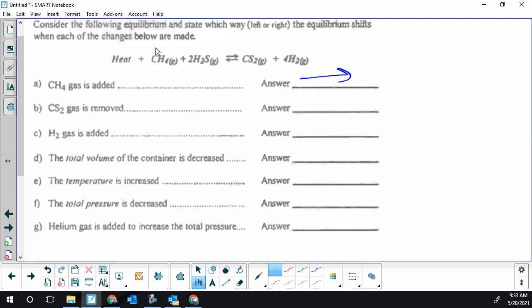In the second example we have the removal of one of our products. If we remove this, the system is going to want to shift to try to replace it. That would require a forward shift which will drive the reactants down including using up some heat and replace what we wanted to have replaced as well as the other product.